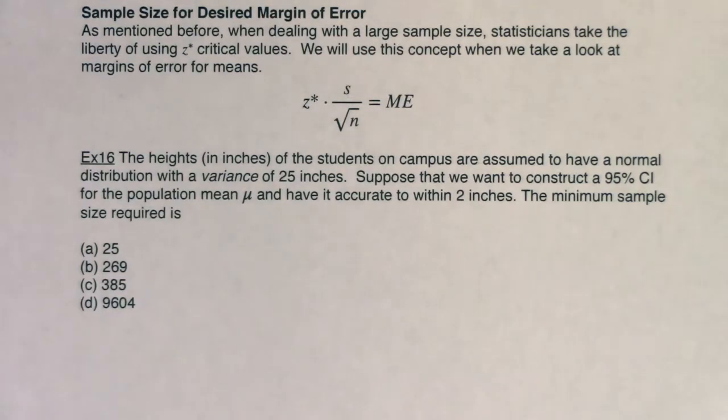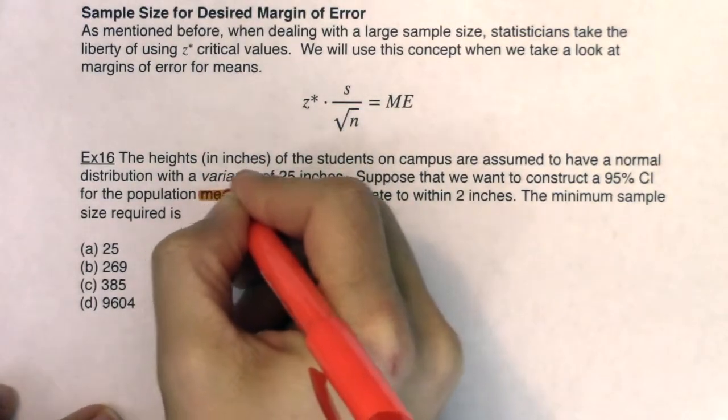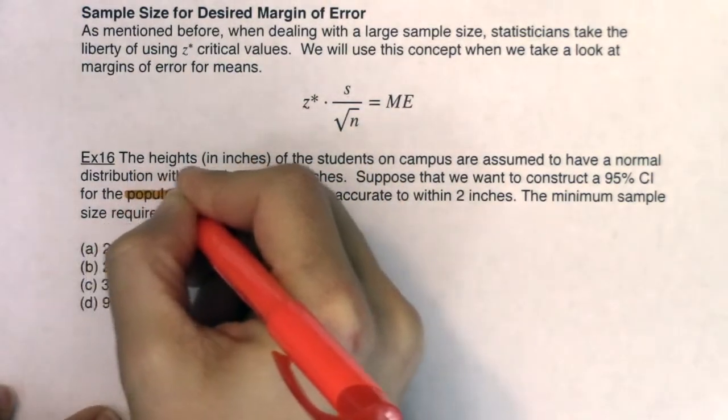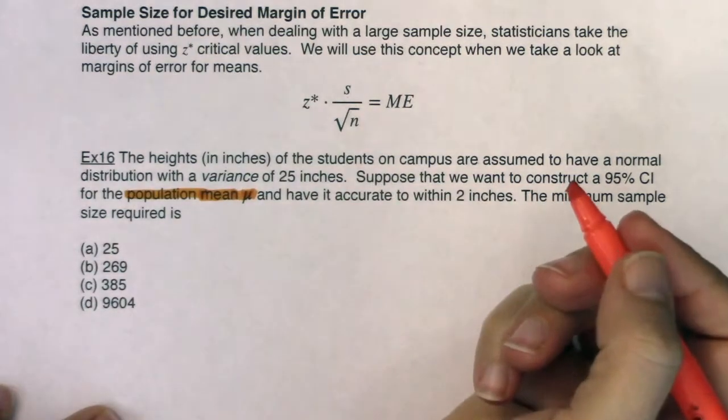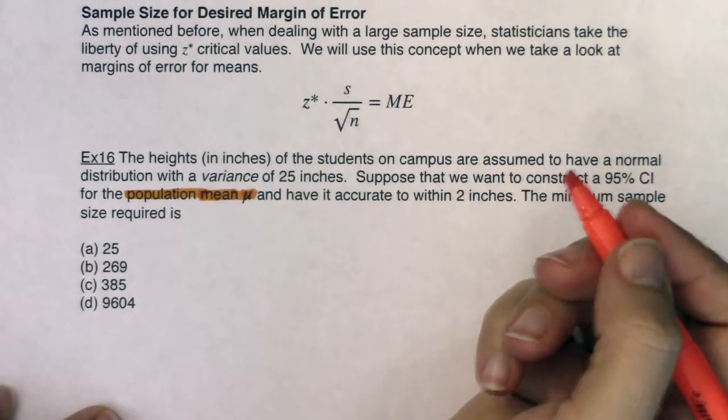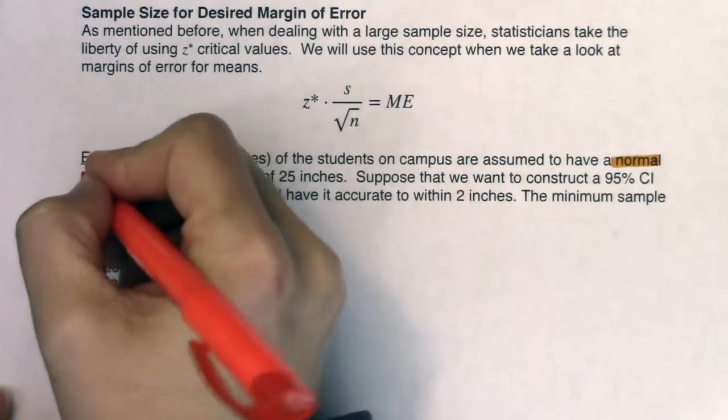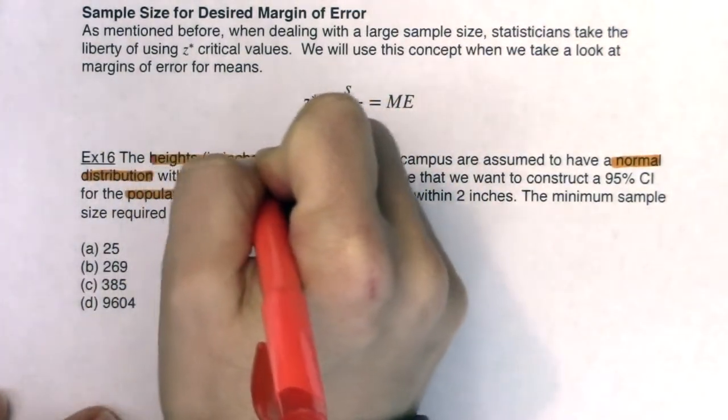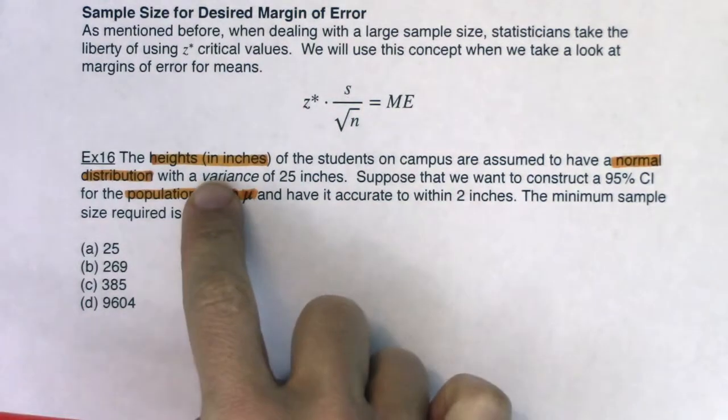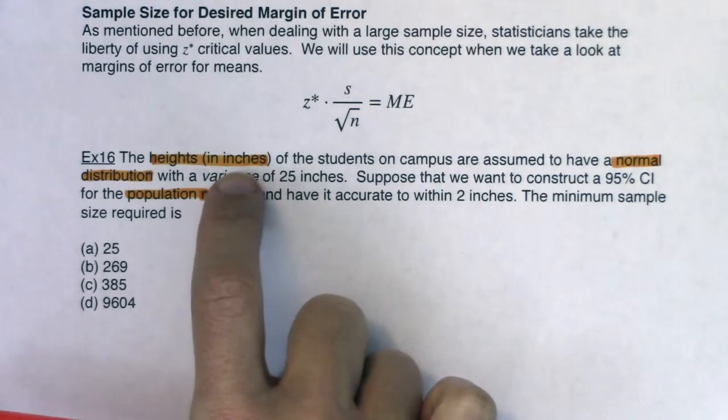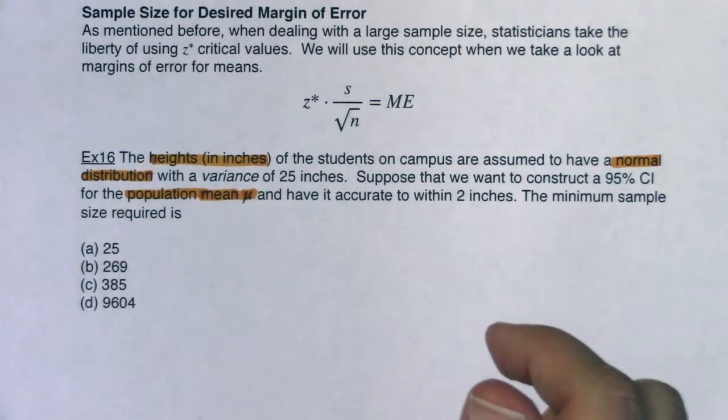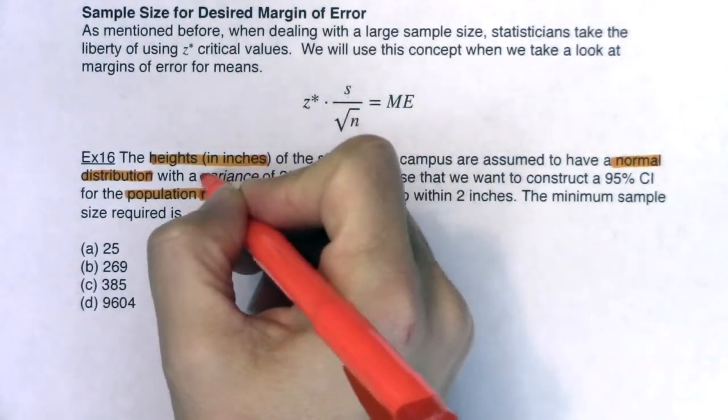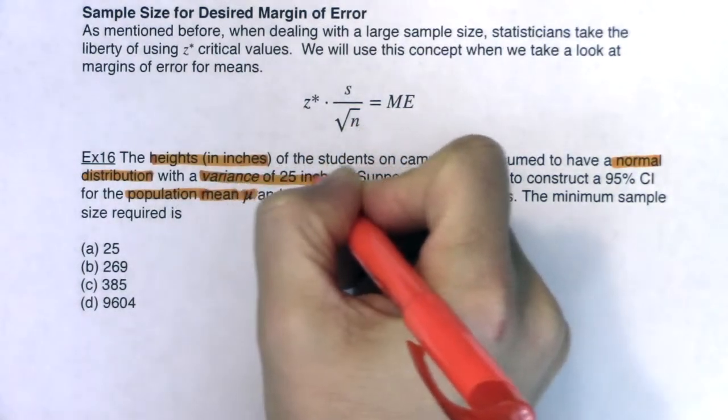As I look through this, there are a bunch of things that pop out to me. So first off, I see mean, I see mu, population mean mu, that's one thing. I see the phrase normal distribution popped out to me. I also see heights in inches. As soon as I saw heights in inches, I knew that I had a numerical variable. So I knew I was in mean land. I had units. Again, I knew I was in mean land.